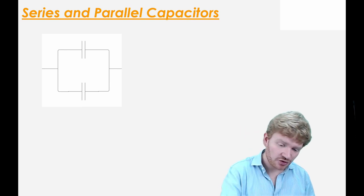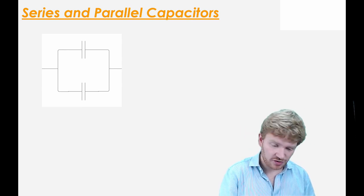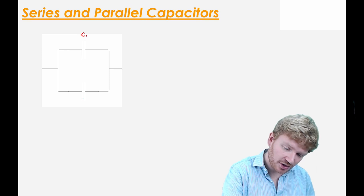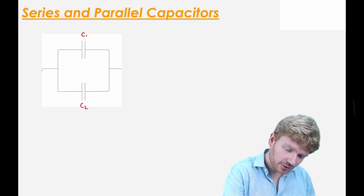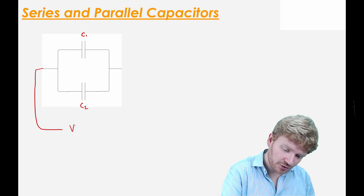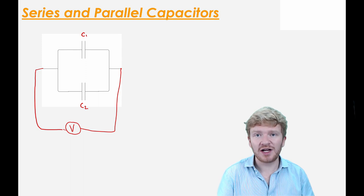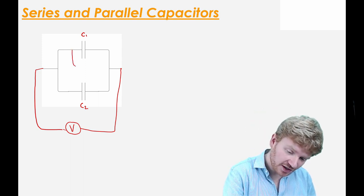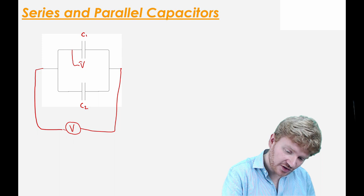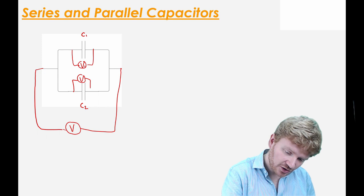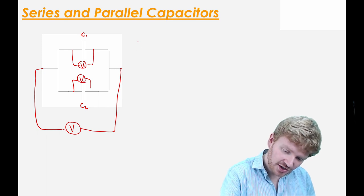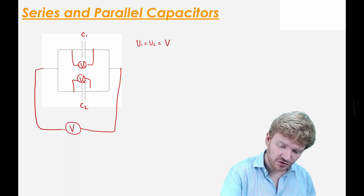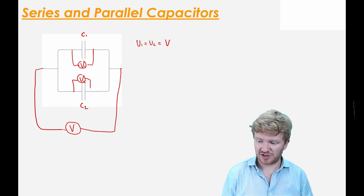Let's think here about two capacitors, C1 and C2, connected up to a voltage in parallel. The first thing I can say is that the voltage across them both will be the same. If I call this V1 and this V2, I can say V1 is equal to V2, which is just equal to the voltage across the pair of capacitors in parallel.